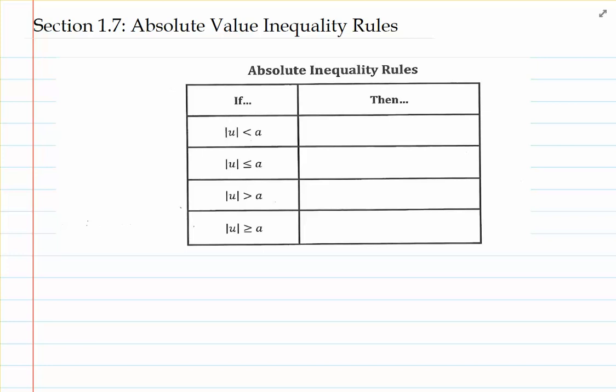Basically, these are rules that we'll be going over in class — well, at least applying them. For right now, I'd like to go ahead and establish these rules for you. There are four different cases that we're going to land in. Notice that in each row, I have the absolute value notation around what's supposed to be an algebraic expression u. And this letter a is meant to represent some sort of positive number.